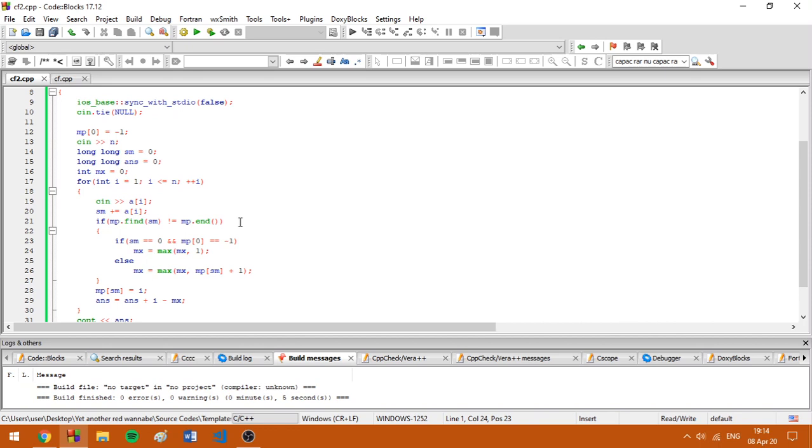Basically, if we have found the sum before, we have two cases. Either the sum is equal to zero and we haven't found a sum equal to zero yet and we need to deal with that special case, in which map of position zero is actually zero, not minus one. Otherwise, we are going to deal with this case as usual. Since in map of some position, we are going to mark the rightmost position in which we have that prefix sum.